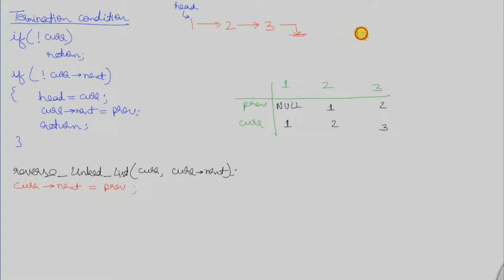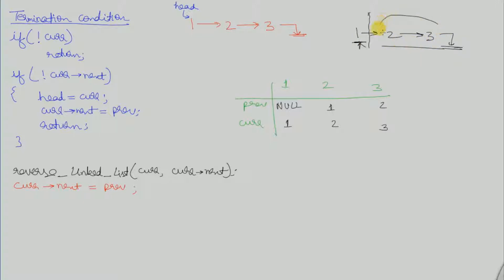Let us take three elements: one, two, and three. If we are at one, the head element, we will divide the linked list into two parts — the one element and the rest of the elements. We will first reverse the rest of the elements, and when we return back in recursion we will make the next pointer of one point to its previous node, which was null.